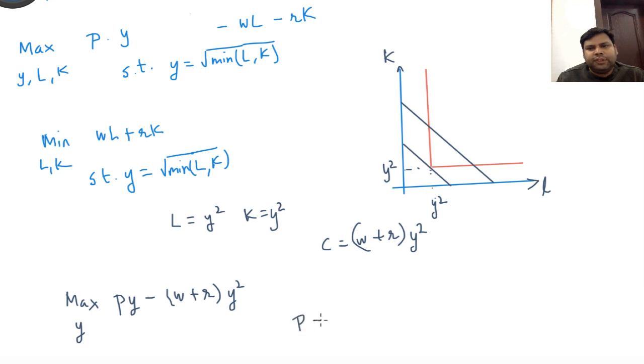We are going to get P minus (w plus r) times 2y equal to 0. So y equals P divided by 2 times (w plus r). This is the firm's supply function.